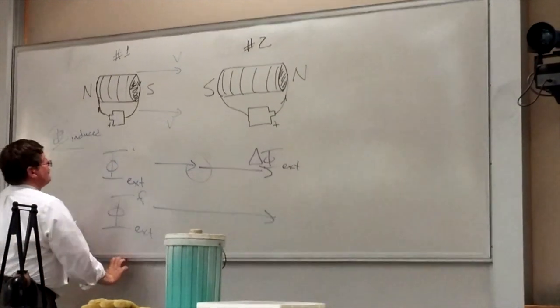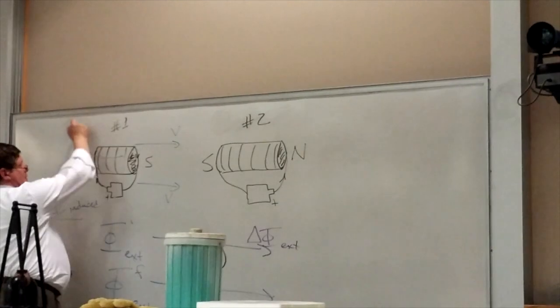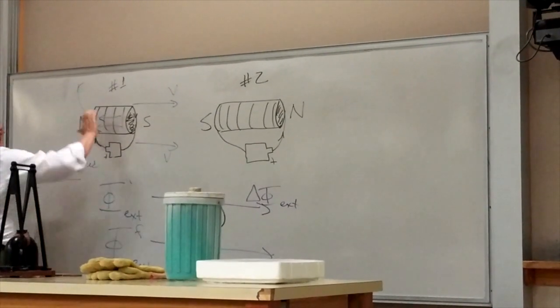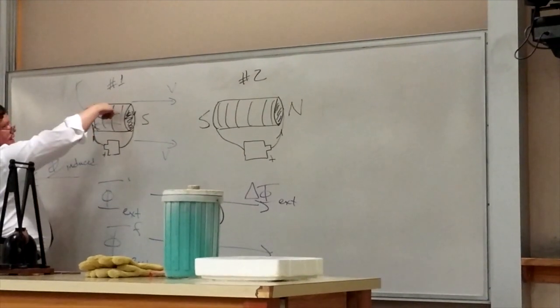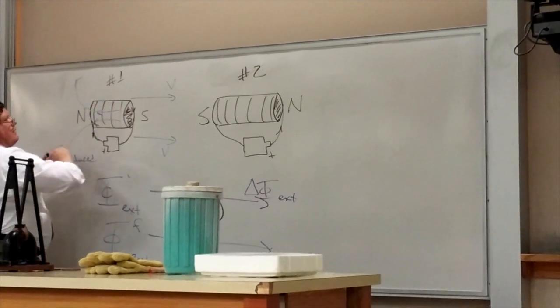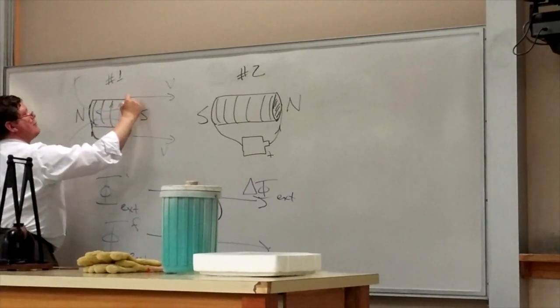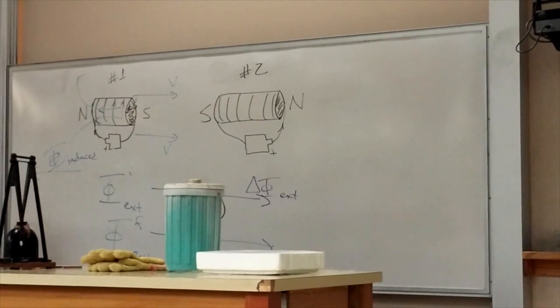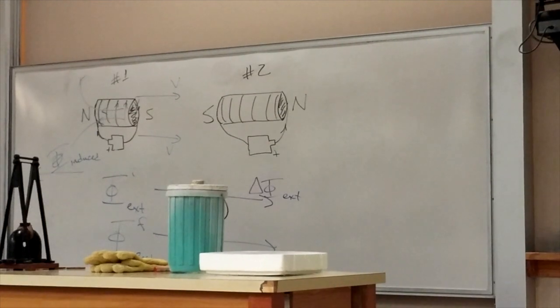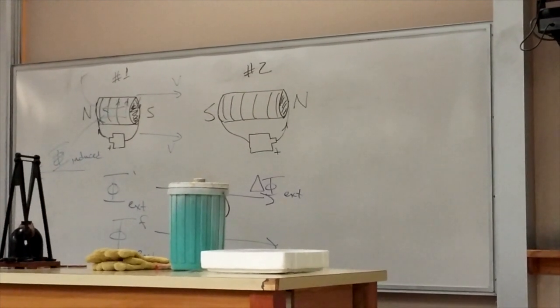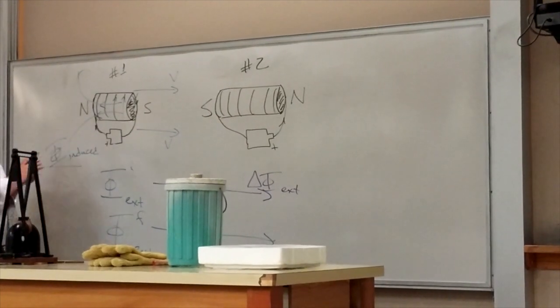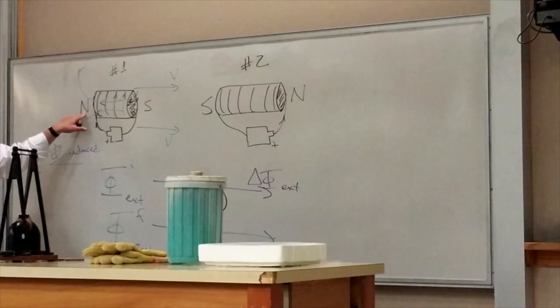In order for induced flux to go through this to the left, that means induced current has to go up the front and down the back by right hand rule number three. Well that's the same direction as the battery current. I've got two kinds of current, two flavors in that coil. The battery current which causes a north pole here, and the induced current which causes a north pole there.